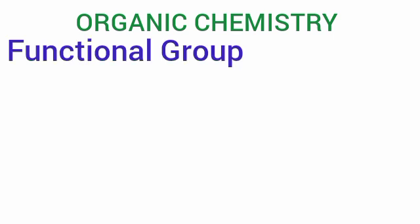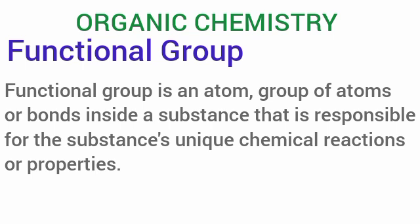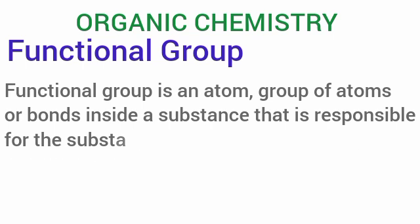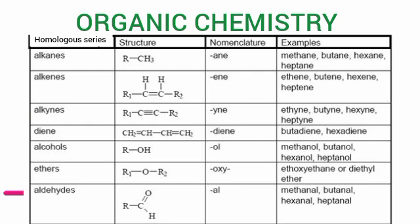A functional group is an atom, group of atoms, or bond inside a substance that is responsible for the substance's unique chemical properties or reaction. Let's take a look at the various homologous series: the alkanes, the alkenes, the alkynes, the alcohols, esters, and the aldehydes.